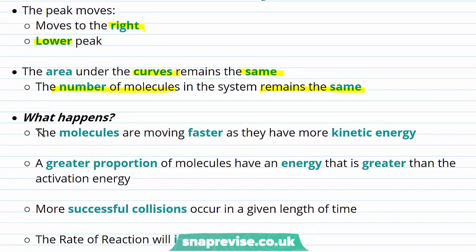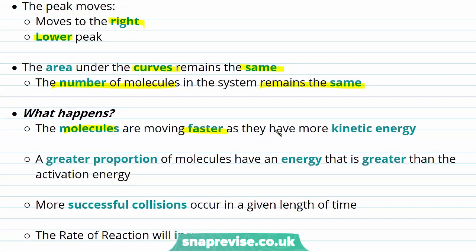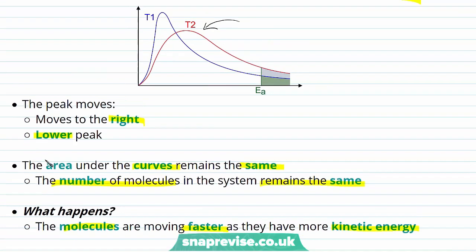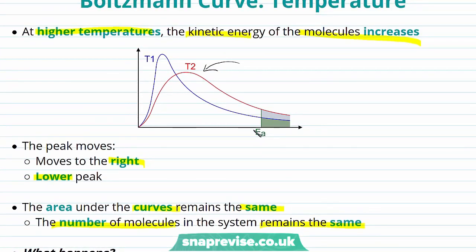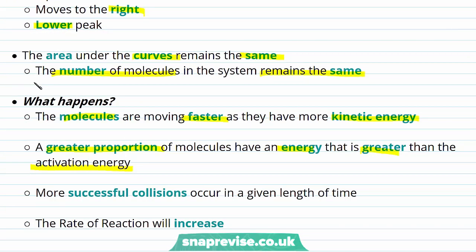So what's happening? The molecules are moving faster as they have more kinetic energy at a higher temperature, so a greater proportion of molecules have an energy greater than the activation energy. On the graph, the activation energy is marked as Ea. The proportion of molecules exceeding Ea at T1 is shown in dark green, whereas at T2 it's the combined green and grey area — a larger total. This means more successful collisions occur in a given length of time and therefore the rate of reaction increases.